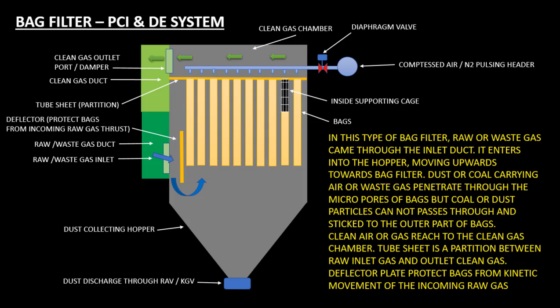In this type of bag filter, raw or waste gas comes through the inlet duct and enters into the hopper, moving upwards towards the bag filter. Dust or coal-carrying air or waste gas penetrates through the micropores of the bags, but coal or dust particles cannot pass through and stick to the outer part of the bags. Clean air or gas then reaches the clean gas chamber.